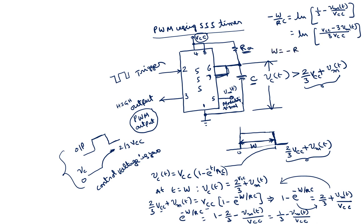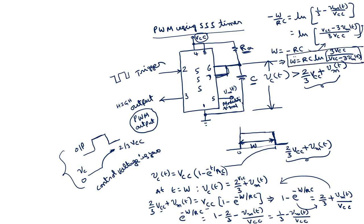Taking the logarithm and reversing the sign: W = R_A C × ln(3 VCC / (VCC − 3 V_m(t))). So the pulse width W varies with V_m of t — that is, the pulse width is modulated by the modulating signal.